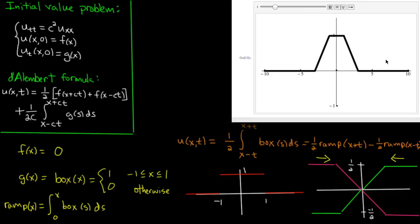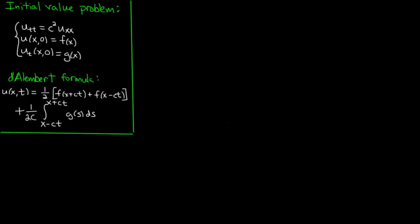Now physically what this corresponds to, you can think of it as an initial velocity which is a velocity of 1 for a small little segment of the string and 0 otherwise. So it's a little bit like a gentle tap from a hammer of width 2 which is centered at the origin. That's kind of the way that you should imagine the physical situation here.